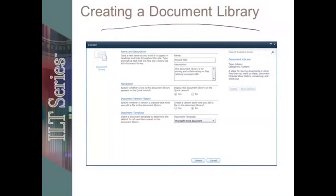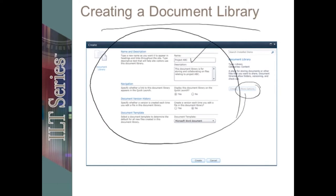When creating a new document library, you will have the opportunity to choose more options. You'll have an opportunity to name the library, which is very important. The very first name you give a new document library is forever its URL name. That means it should avoid spaces, it should be lowercase, and it should be relevant without being too specific, because the initial URL can never ever be changed again. So it's important not to name it something like 'Project ABC' — instead use a more generic but still relevant name.